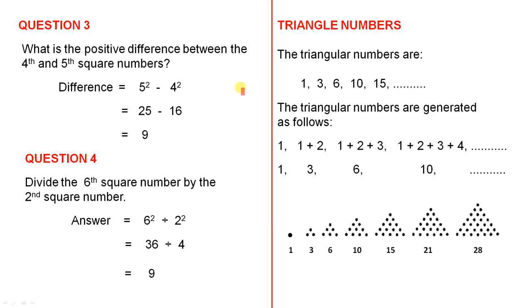What is the positive difference between the fourth and fifth square numbers? Positive difference means that the answer is a positive number. So we have to put the large one first. So we have 5² minus 4², because it's the fifth minus the fourth. 25 minus 16 is 9.